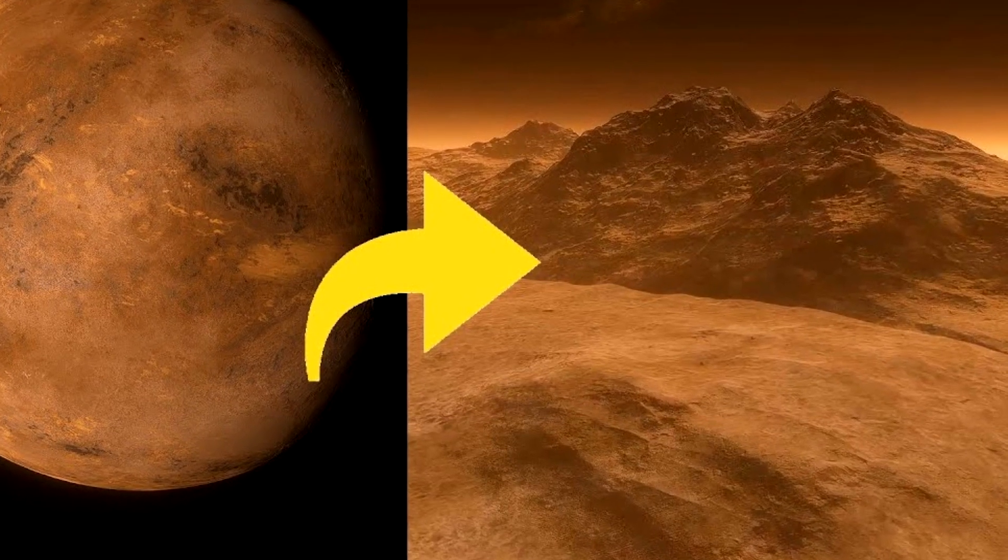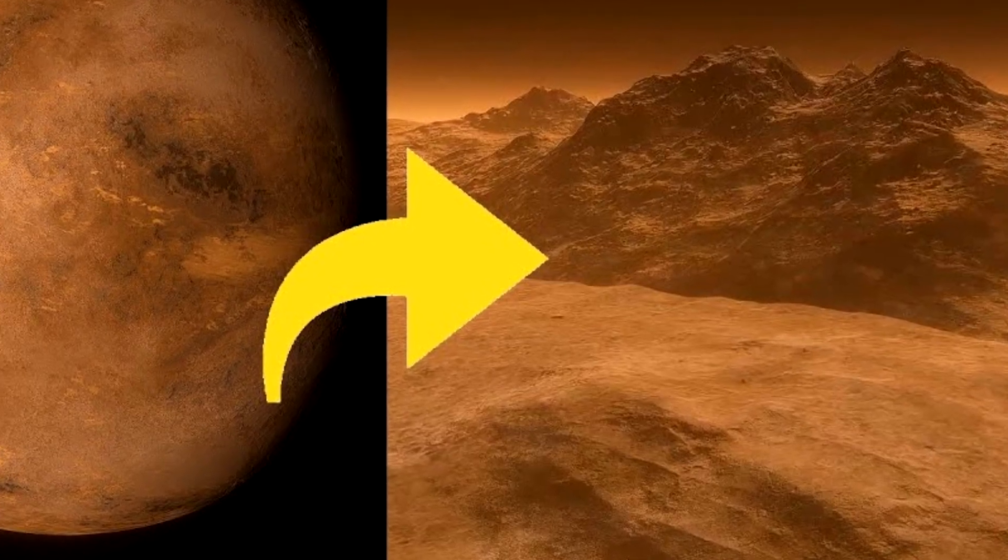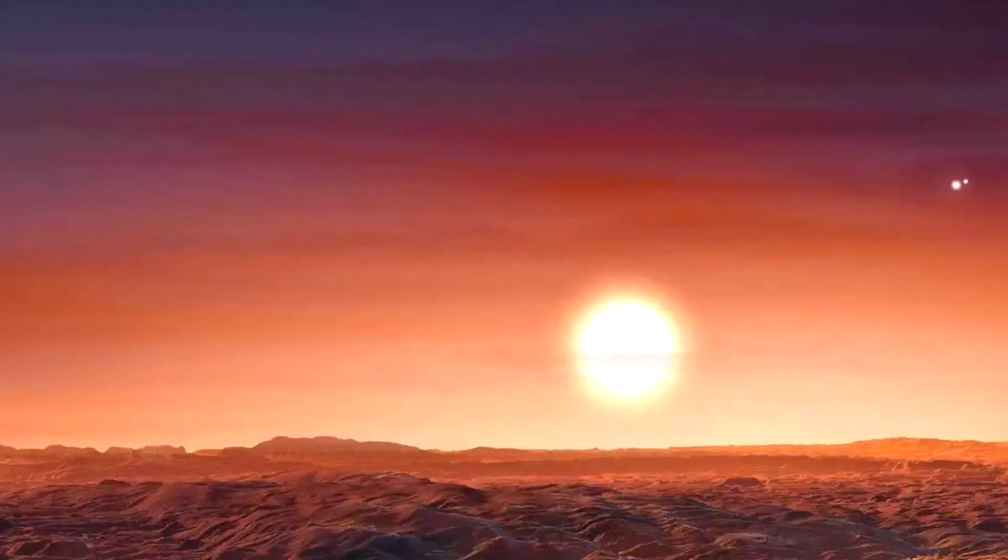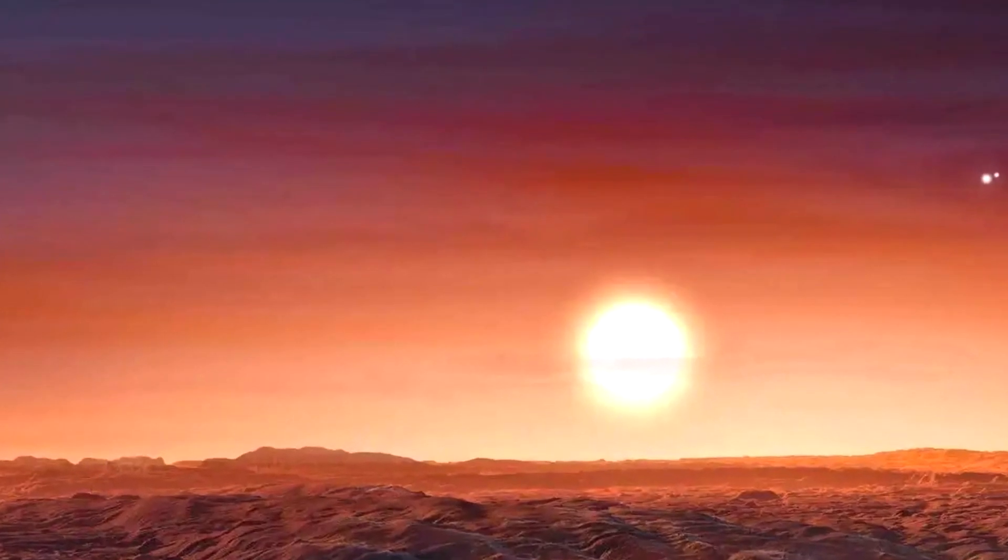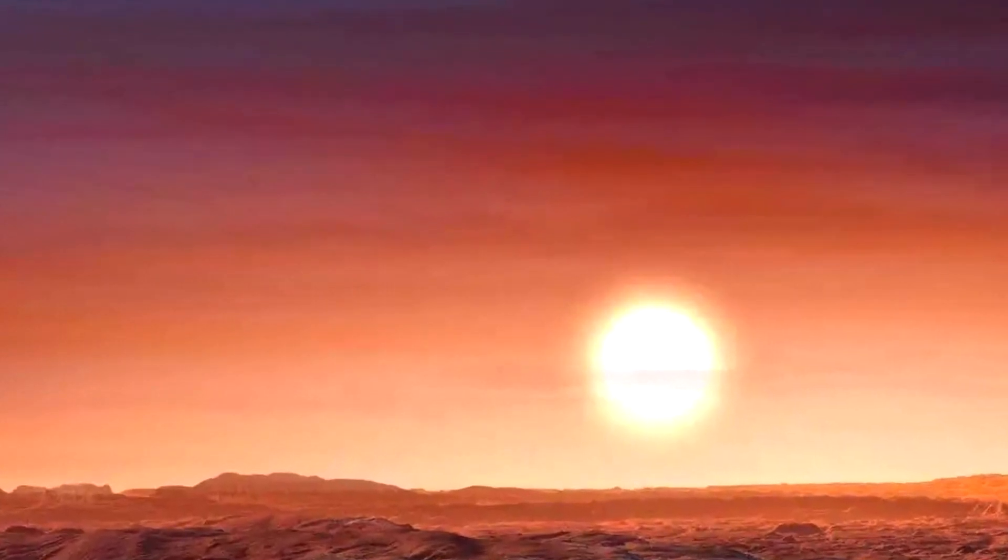Proxima B is also likely to be tidally locked in a synchronous rotation. This is a very strong possibility. In a manner analogous to that of our own Moon, this indicates that one side is always facing the star while the other side is always facing away from the star.